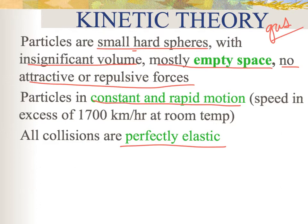Think of a basketball — if you drop it, it will continue to bounce, but it doesn't bounce back to the same height every time; the bounce decreases until it stops. That is what we call inelastic. Gas particles, according to the theory, are perfectly elastic — so if it were perfectly elastic, the basketball would bounce back to the same height every time. That's what happens with gas particles: they collide, hit each other, and bounce back with that same amount of energy.